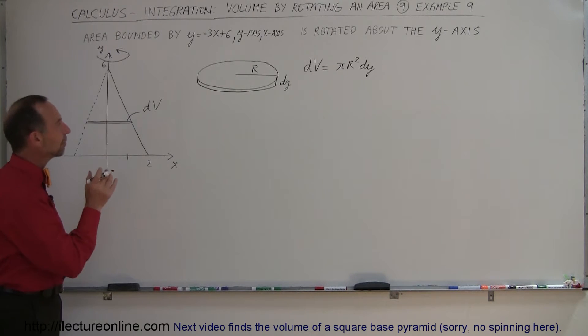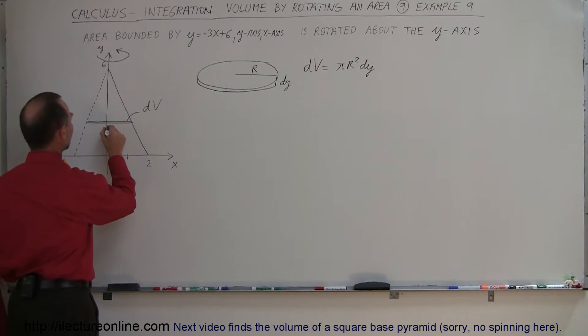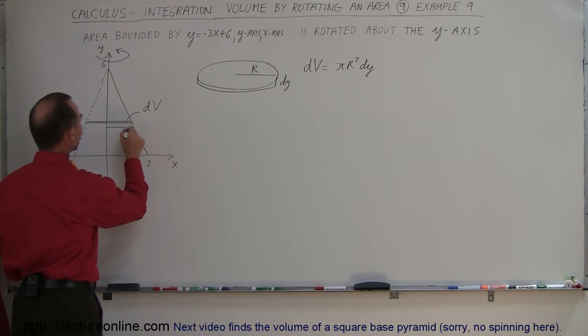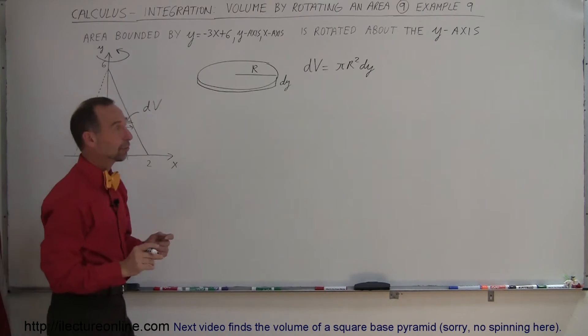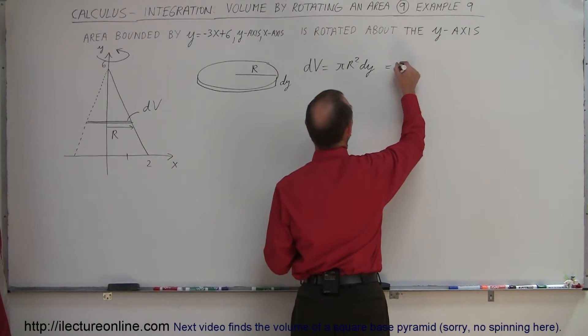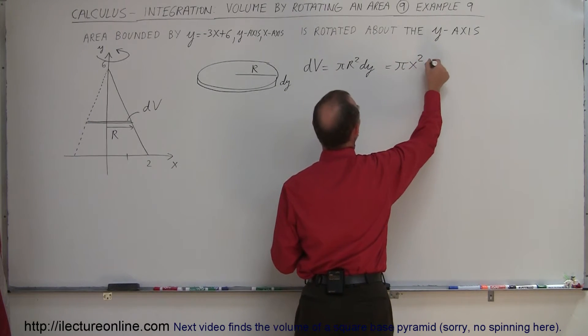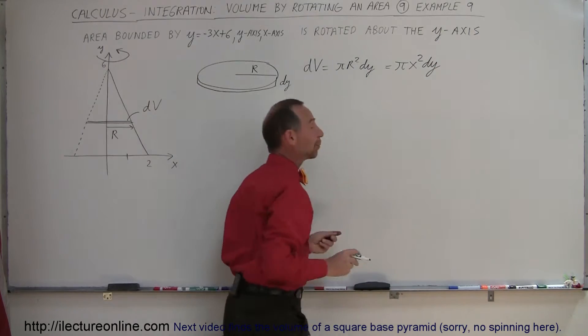So what is the value for r? r is the distance from the y-axis down to the edge right here. So that would be r. In this case, r has to be equal to x. So therefore we can write that this is equal to π times x squared dy.